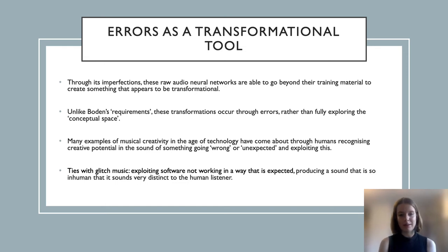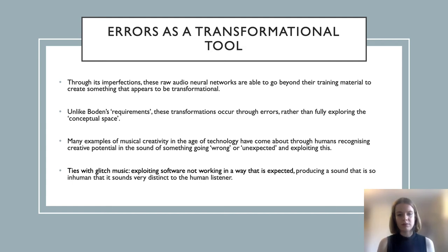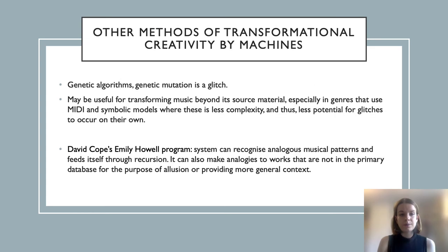Many examples of musical creativity in the age of technology have actually come through humans recognizing the creative potential in the sound of something going wrong or unexpected and exploiting this. Examples include Grandmaster Flash's discovery of scratching — using records as sources for percussive expressive sounds — or the exploitation of the Roland TB-303 in the acid house genre, which was originally designed to simulate bass guitars. The most relevant example is glitch music: exploiting software not working in an expected way produces a sound so inhuman it sounds very distinct to the human listener, then organizing this into sound collages. Oval is quite a good example, and aesthetically many glitch albums do have a similar resemblance to the raw audio generated by these systems.